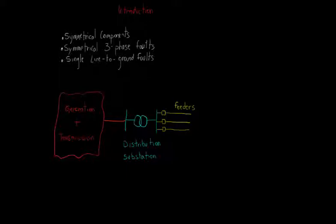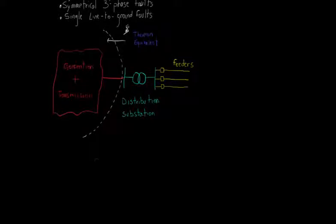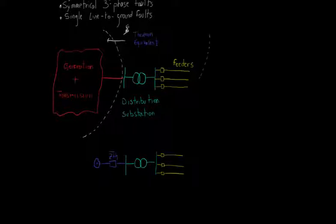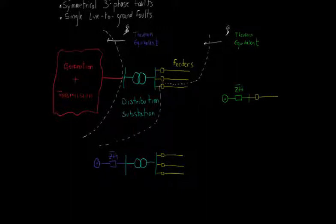As our goal is to study only the distribution system, we can consider the Thevenin equivalent seen from this point. Then, the red block is represented by a voltage source behind an impedance, usually called Thevenin equivalent impedance, which is exactly the vSource element in OpenDSS. Let's say, for example, that we wanted to study only one feeder of the distribution system. In this case, applying the same principle, we would end up with a simplified circuit with a different Thevenin equivalent impedance and a feeder in study.